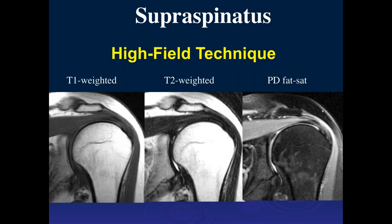We used to also do T1 weighting to see tendinosis patterns, but we can see that well with the PD fat sat. The T2 images give more specificity when grading whether there's a tear versus severe tendinosis — tendinosis is fairly dark on T2, bright on PD fat sat, but fluid is very bright on T2. We still have good fat signal on T2-weighted images. These are fast spin echo T2; on truly T2-weighted images fat was actually suppressed, but we're talking about fast spin echo T2.